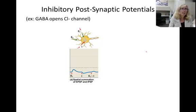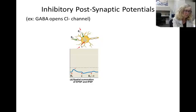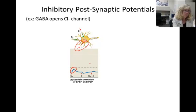An inhibitory postsynaptic potential will actually cause hyperpolarization, making it harder for that neuron to fire. This image shows an excitatory signal causing a depolarization and an inhibitory signal causing a hyperpolarization.